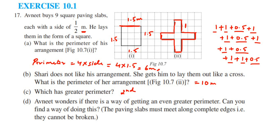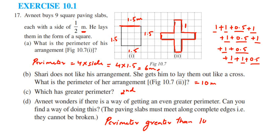The fourth question asks: can Avnit find a way of getting an even greater perimeter? They also specify that we should not break the slabs — each slab should remain in the shape of a square. Given this condition, a perimeter greater than 10 meter cannot be determined. So the answer is: cannot be determined.